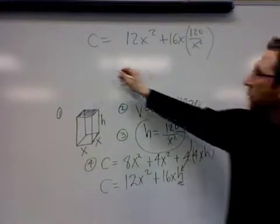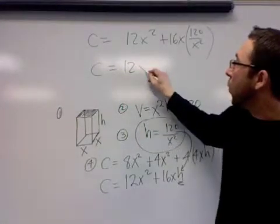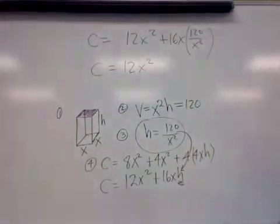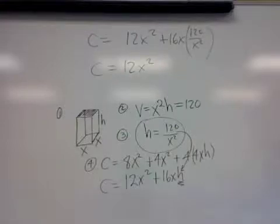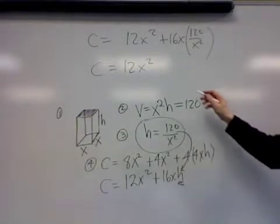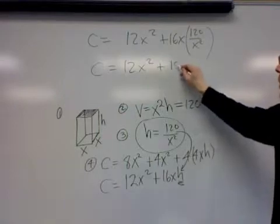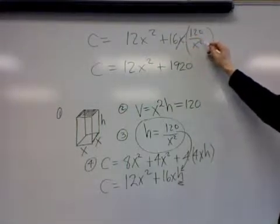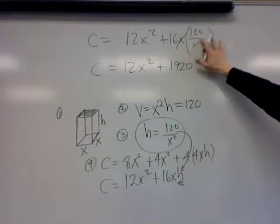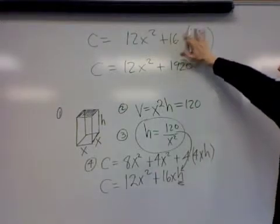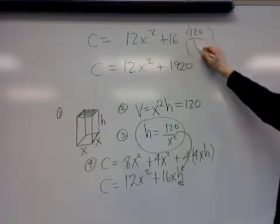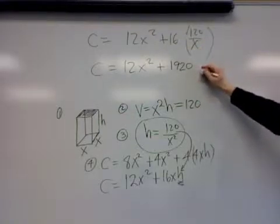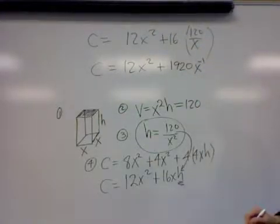With a little simplifying, we can get this equation ready for the derivative. We multiply 16 times 120—you get 1920. So it's 1920. The x cancels with one of the x's down below, leaving you with just one x underneath, and then you can bring that x up to make it x to the negative first.